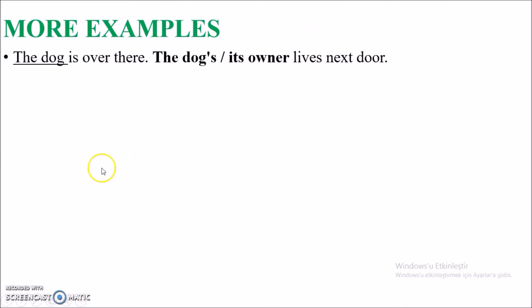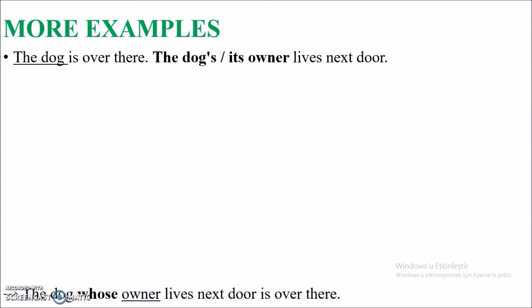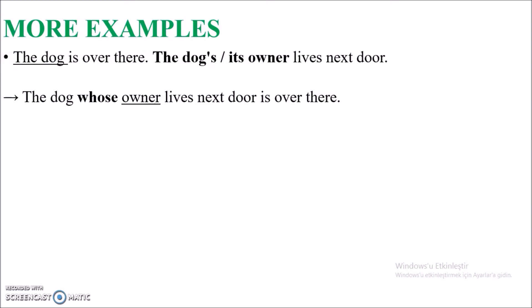More examples: 'The dog is over there' and 'The dog's owner lives next door.' Possession is not only shown with 'its', 'her', 'his', 'my' — you can also use the possessive S. Look at the meaning — if there's possession, you can use the pronoun 'whose'. So: 'The dog whose owner lives next door is over there.' In this sentence, you can see that 'whose' is not only used with people — you can also use it with things.